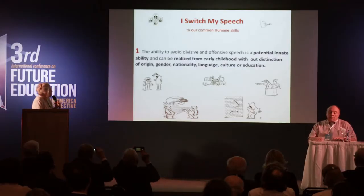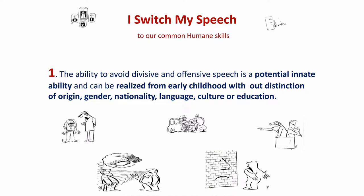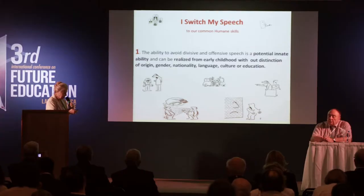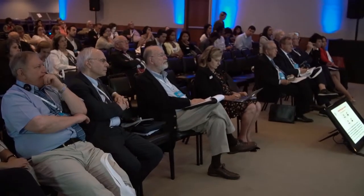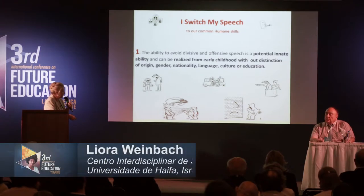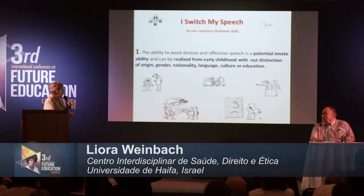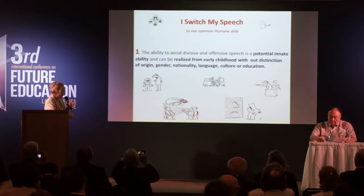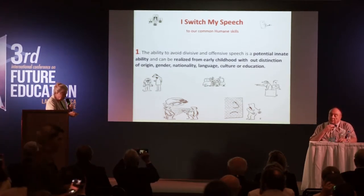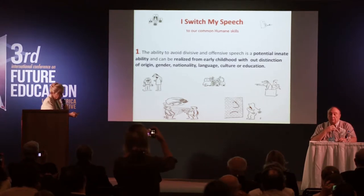Principle number one: the ability to avoid division and offensive speech is a potential innate ability and can be realized from early childhood without distinction in origin, gender, nationality, language, culture, or education. The unconscious system is like talking to the world — here is when you are blaming, it fires back; here is ruling the other and being ruled; here is attacking the other. All four unconscious systems of speech behaviour.